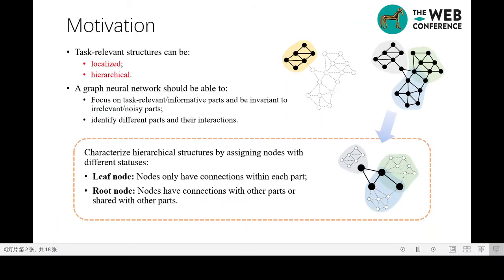This work is about graph level prediction, such as graph classification or graph regression tasks. Similar to image data, for graph data, task relevant structures can be local as in the given left graph, which is generally large and noisy graphs. This requires that the graph neural network model should be able to focus on task relevant parts and be invariant to irrelevant parts.